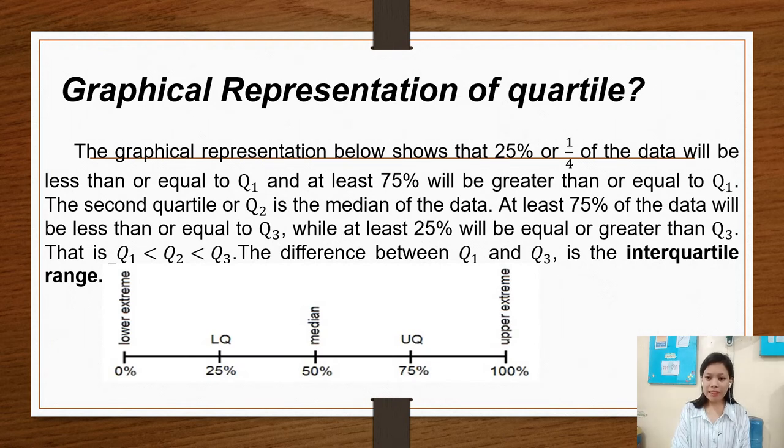Graphical representation of quartiles. The graphical representation below shows that 25% or one-fourth of the data will be less than or equal to first quartile. And at least 75% will be greater than or equal to quartile 1. The second quartile, or quartile 2, is the median of the data. At least 75% of the data will be less than or equal to quartile 3, while at least 25% will be equal or greater than quartile 3.